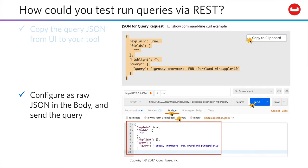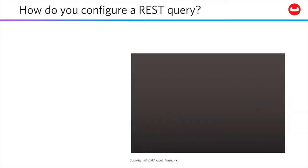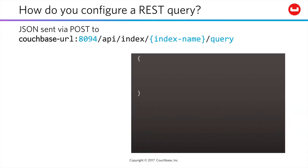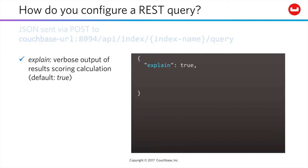Then just send your query. The query itself is just JSON posted to port 8094 of your Couchbase server to the URL shown. The index name is part of the URL, followed by a slash query to complete the endpoint. You'll see various optional attributes for the JSON payload in the labs ahead and in the documentation, including, for example, an explain attribute that can be added. This causes verbose output of your scoring calculations. It's also the default. You'll see later that you can turn it off if you want to make your results a little more straightforward.